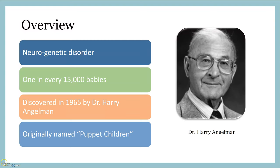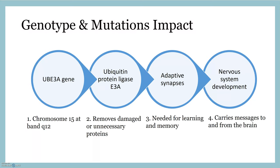This disorder was discovered to be caused by a mutation in the UBE3A gene located at chromosome 15 at band Q12. This gene regulates the production of ubiquitin protein ligase E3A, which removes damaged or unnecessary proteins. This process is needed to allow for adaptive synapses, which is required for learning and memory. Overall, this chain of reactions prevents nervous system development, which is critical in everyday life.